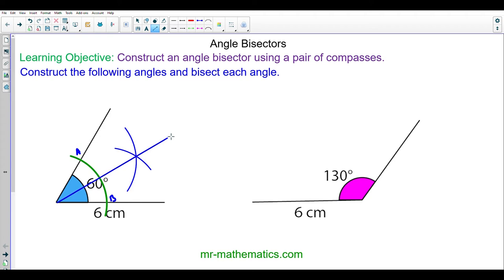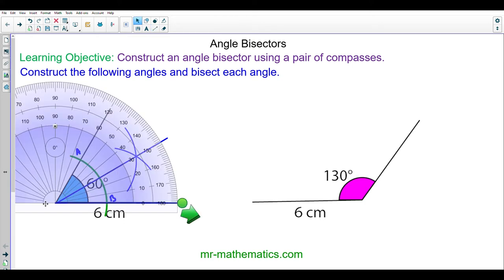Now I'm going to use the protractor to show that I've created two 30-degree angles by bisecting the 60 degrees. You can see by bisecting the angle, I have split the 60 degrees in half to create two 30-degree angles.